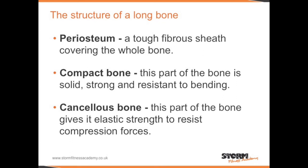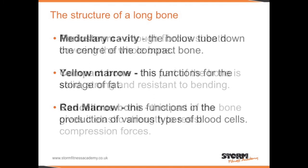Compact bone is the part of the bone that is solid, strong, and resistant to bending. Cancellous bone is the part of the bone that gives it elastic strength to resist compression forces. The medullary cavity is the hollow tube that runs down the centre of the compact bone. Within that cavity is yellow marrow, which functions for the storage of fat. There is also red marrow, which functions in the production of various types of blood cells.